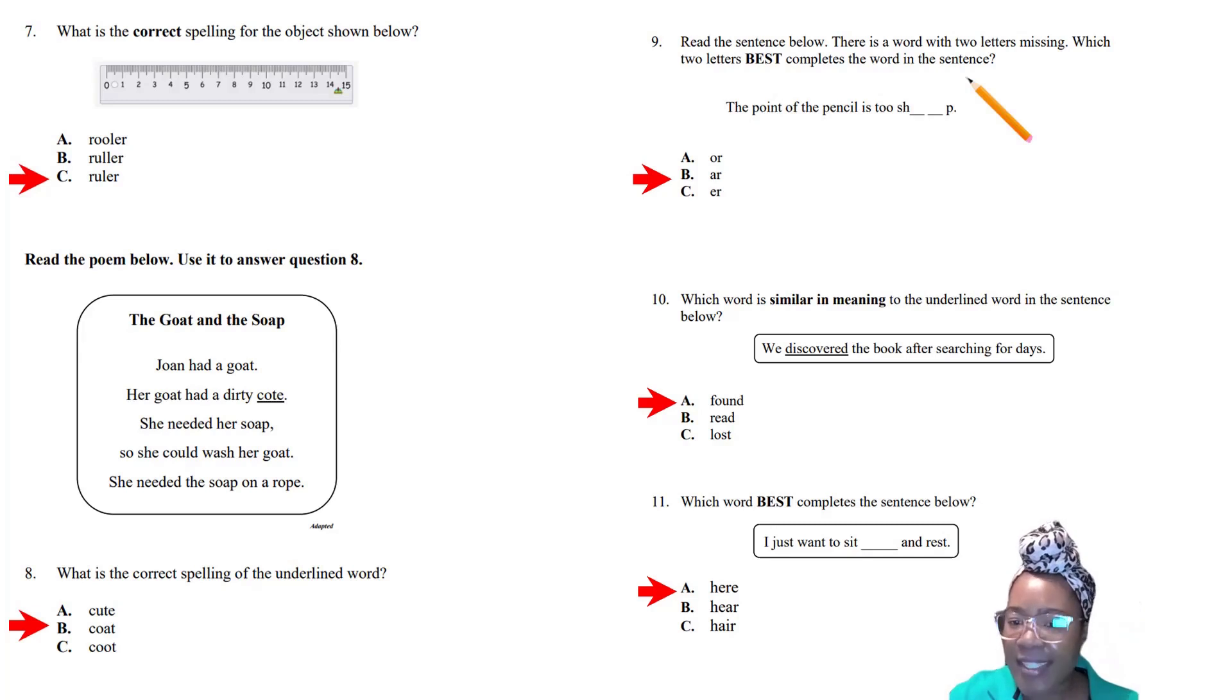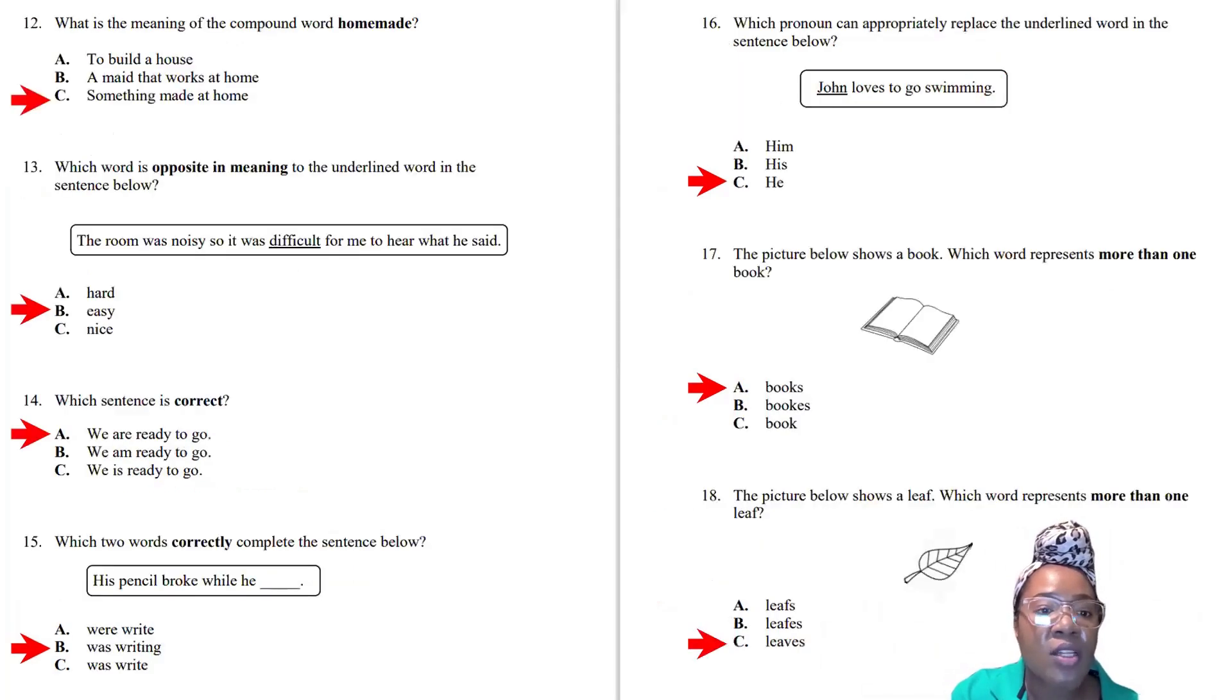Question eleven: Which word best completes the sentence below? 'I just want to sit blank and rest.' H-A-I-R is hair growing from your scalp. H-E-A-R is the verb to hear or listen. H-E-R-E is talking about position, I am here and there. The answer is A, here, H-E-R-E.